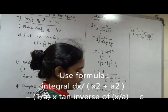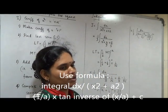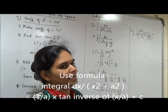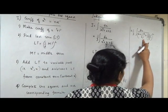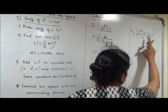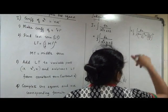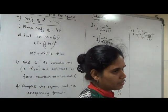Which formula? 1 x square plus a square. That's 1 by a tan inverse of x by a. In place of x what you will write? x plus 1 by 6. In place of a you will write root 23 by 6. You have to take the LCM and simplify. 1 by 3 will be carried forward. And that will be the final answer.